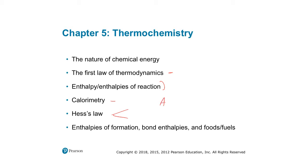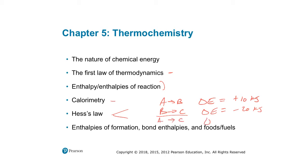If A goes to B with a delta E of plus 10 kJ, and B can form C with a delta E of minus 20 kJ, then if we have A go to C, delta E should be equal to minus 10 kJ — kind of like adding these reactions up, with B canceling out. I can simply sum 10 plus minus 20 to get minus 10 for A all the way to C.